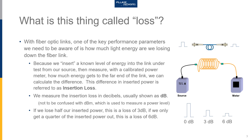Loss is a measure of how much light we are losing down a fiber optic link. As you can see from the top graphic, we put an amount of light into a link, and at the far end we get a reduced amount out. The difference between those light levels is the loss. We insert a known level of light energy into the link from our source, and measure at the far end — using a calibrated power meter — how much energy gets to the far end. The difference between the inserted power level and the received power level is the insertion loss or link loss.